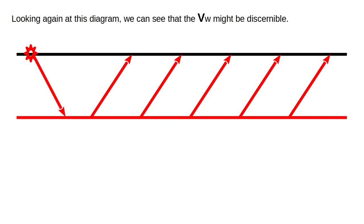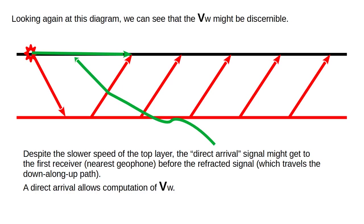Looking again at the diagram, we can see that the weathering velocity might be discernible. Despite the slower speed of the top layer, the direct arrival signal might get to the first receiver (nearest geophone) before the refracted signal, which travels the down-along-up path. A direct arrival allows computation of the weathering velocity.